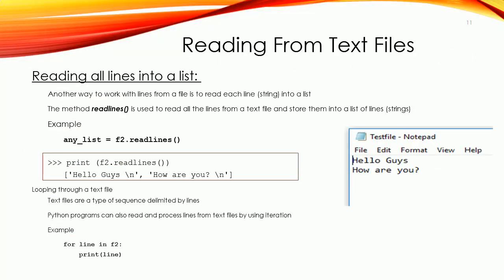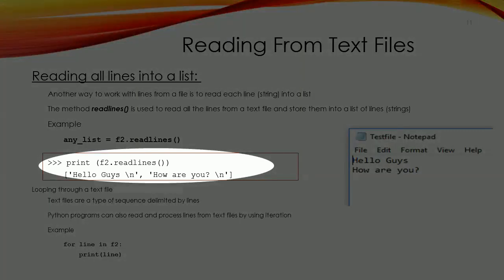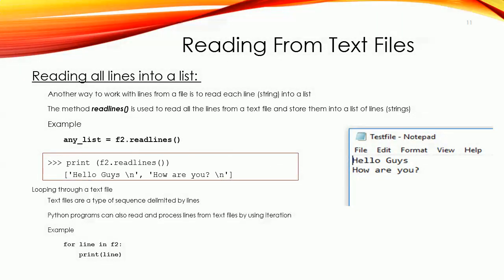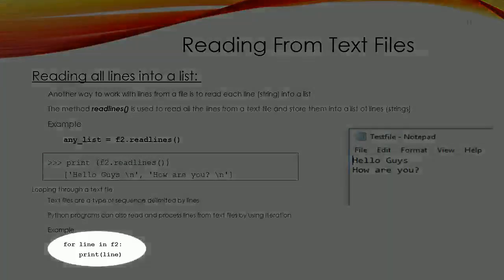Let's move to another method: readlines(). The readlines() method reads until EOF (end of file) and returns a list containing the lines. For example, print(file2.readlines()) — the output will be a list containing 'Hello, guys.' as the first item, then 'How are you?' as the second item. It's also possible to loop through a text file, reading each line one at a time per iteration.